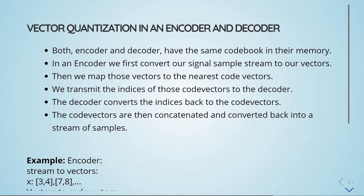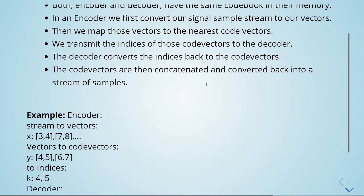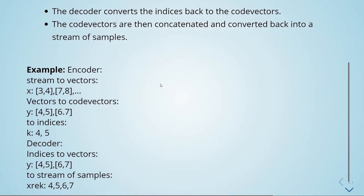Then we transmit the indices of those code vectors to the decoder. The decoder converts the indices back to the code vectors, and the code vectors are then concatenated and converted back into a stream of samples.